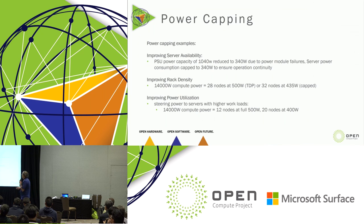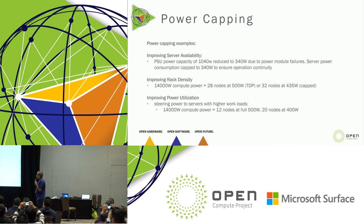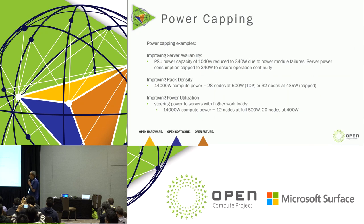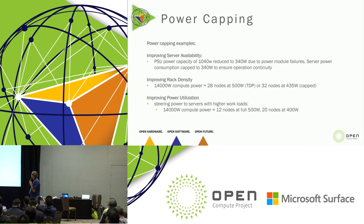Here are a couple of examples showing how we can leverage power capping to improve server availability. We discussed the Project Olympus power supply providing a total power of 1,040 watts. But if there is any hardware failure or AC loss causing capacity to drop down to 340 watts, we can use power capping to cap the server to 340 watts and continue operation.